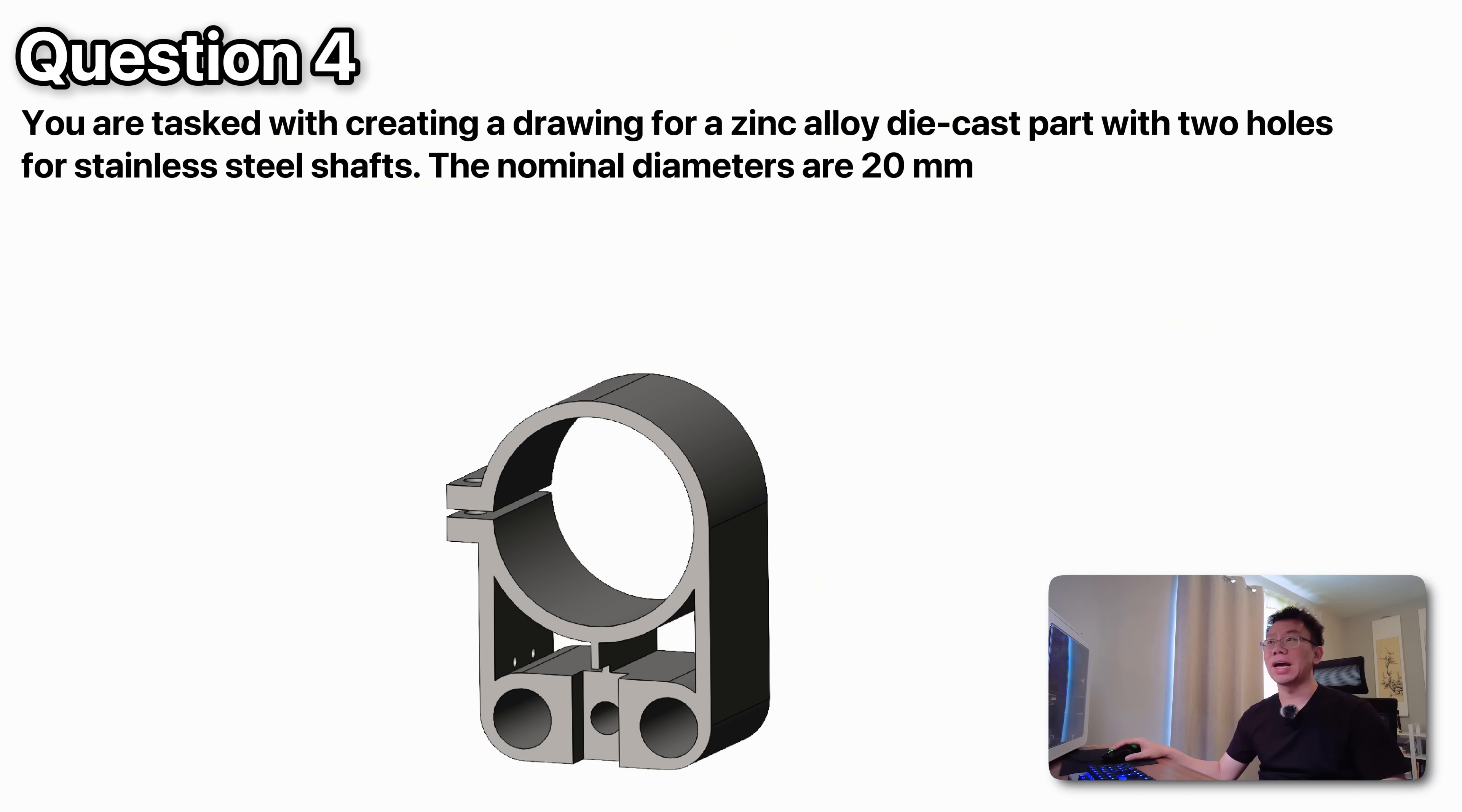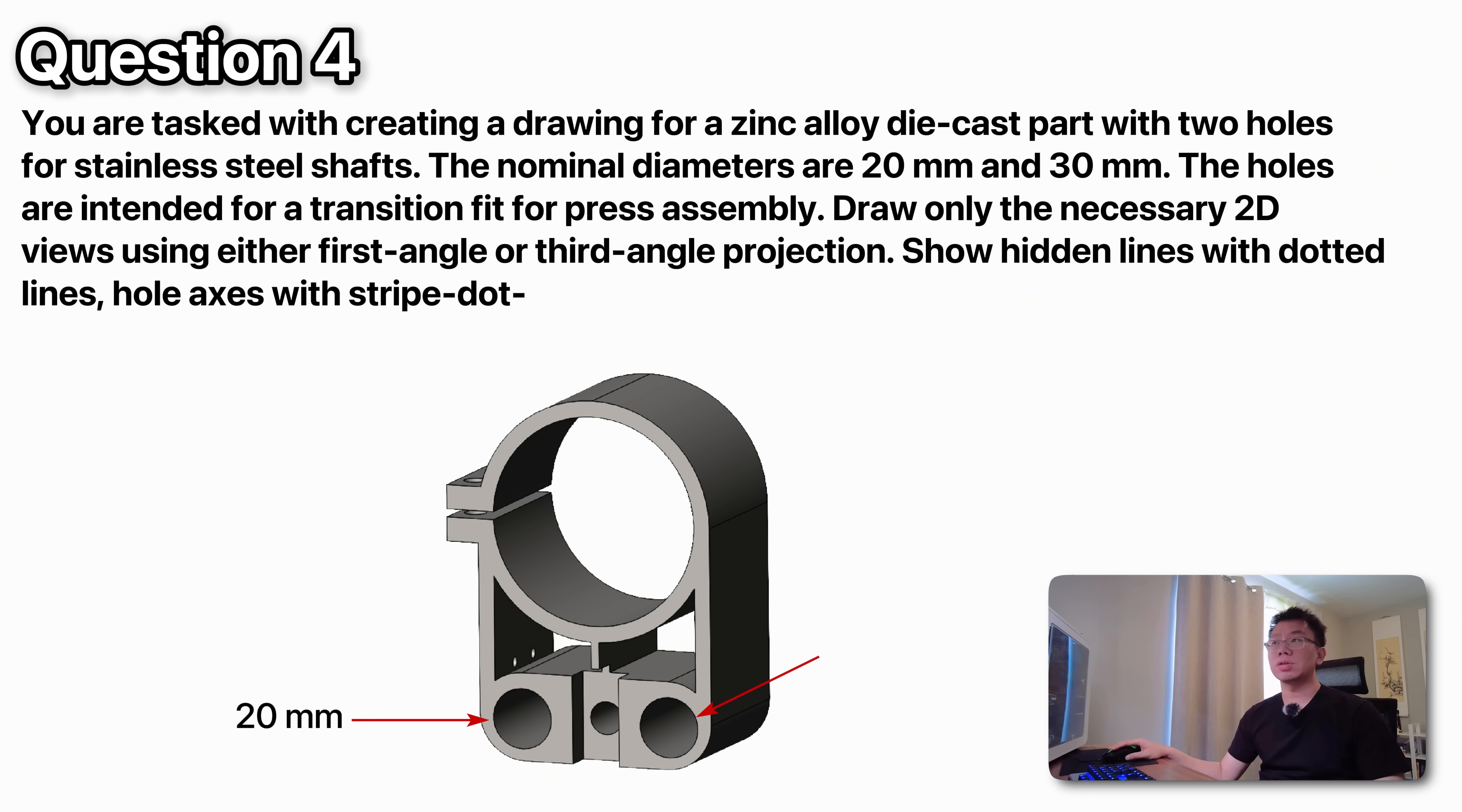The fourth and final question relates to a manufacturing drawing exercise. You're tasked with creating a drawing for a zinc alloy die-cast part with two holes for stainless steel shafts. The nominal diameters are 20 millimeters and 30 millimeters, the holes are intended for a transition fit for press assembly. The instructions are draw only the necessary 2D views using either first angle or third angle projection, show hidden lines with dotted lines and hole axes with stripe dot stripe lines, and specify all dimensions including hole and shaft tolerances. Pause the video, take about five minutes to complete this exercise, and we'll go over the solution.